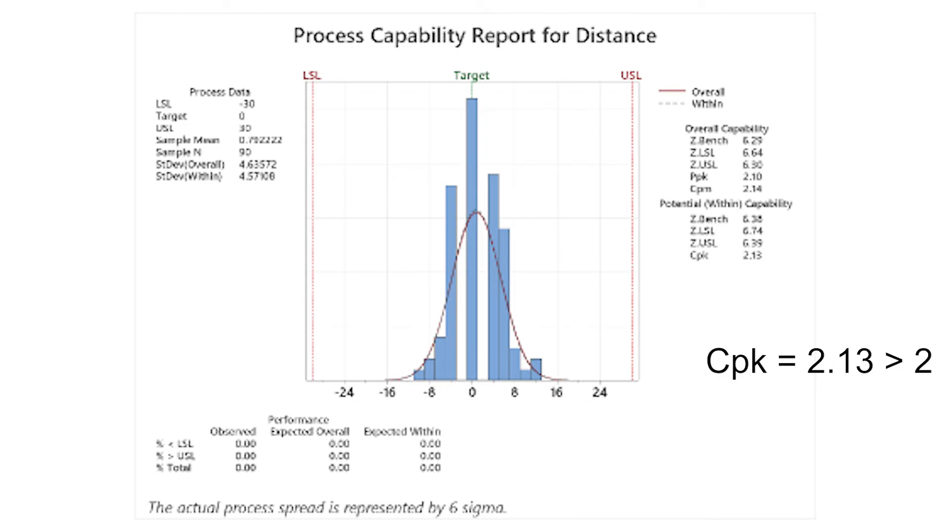With this, we conducted a process capability analysis for the improved throwing technique. We see that the CPK is 2.13, with the peak of the histogram around the mean, with a normal distribution. With the CPK above 2, this indicates that the technique meets the 6 sigma process standard, and is an improvement over the throwing techniques used by the operators at the beginning.